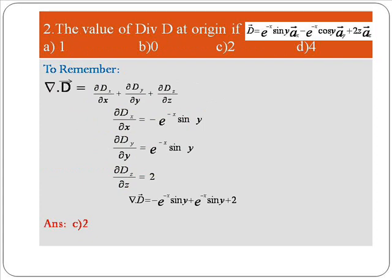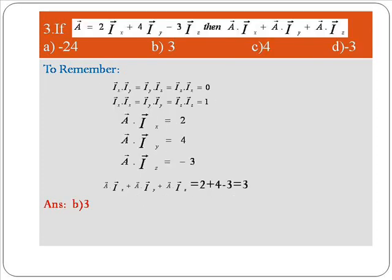Second problem: find the value of divergence of D at the origin, where D vector equals e^(−x) sin(y) a_x − e^(−x) cos(y) a_y + 2z a_z. Options: A) 1, B) 0, C) 2, D) 4. The formula is: del dot D vector equals ∂Dx/∂x + ∂Dy/∂y + ∂Dz/∂z. We differentiate each component with respect to its variable and add the results. The final answer is del dot D vector equals 2, so option C.